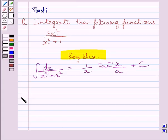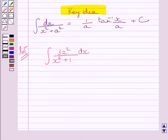Let us now start with the solution. We have to find ∫ 3x²/(x^6 + 1) dx. This integral can be rewritten as ∫ 3x² dx / [(x³)² + 1].